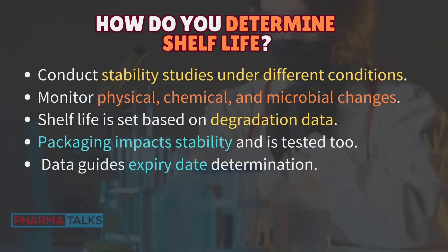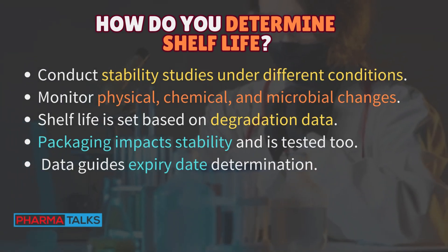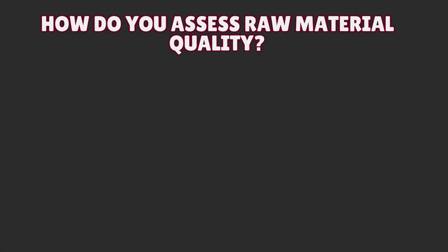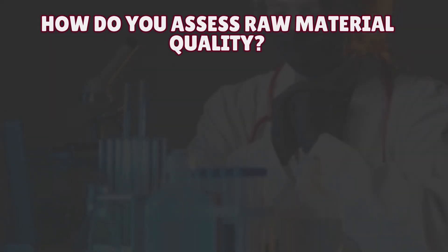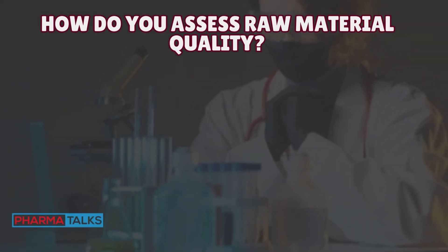How do you determine shelf life? Conduct stability studies under different conditions. Monitor physical, chemical, and microbial changes. Shelf life is set based on degradation data. Packaging impacts stability and is tested too. Data guides expiry date determination.